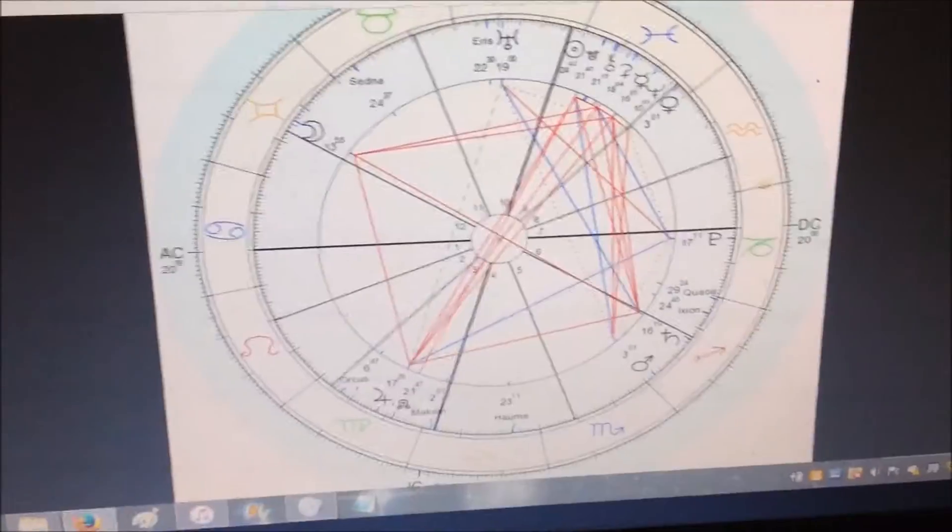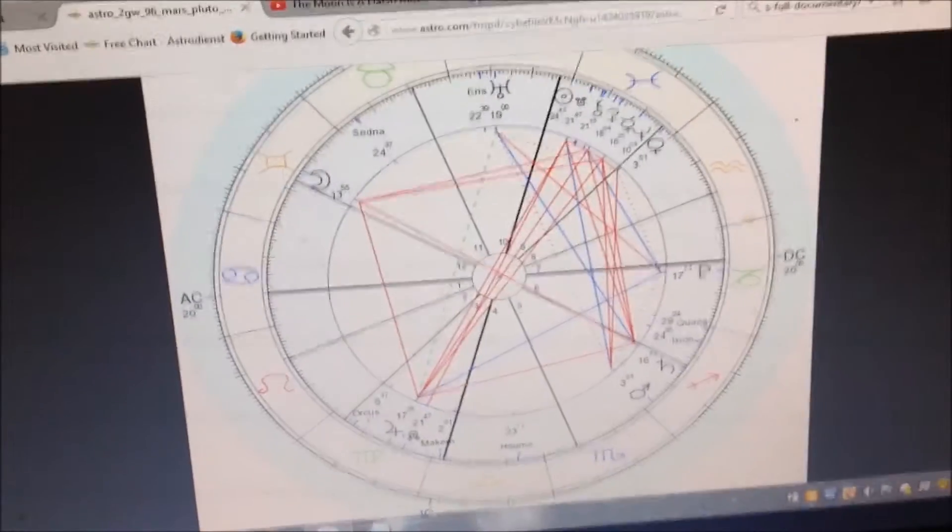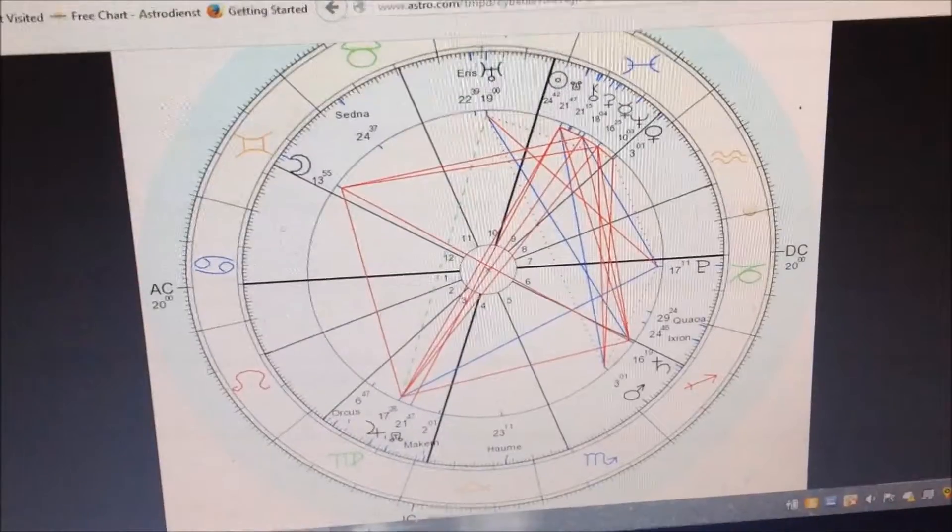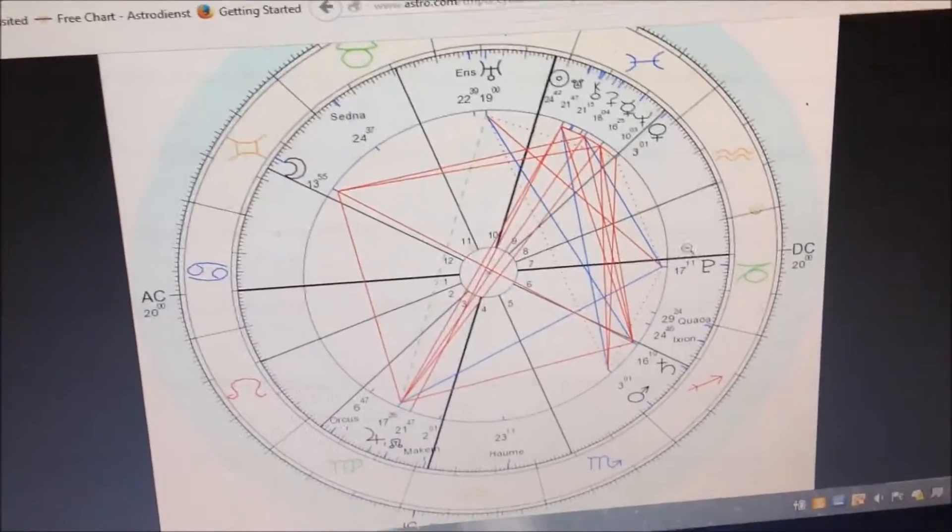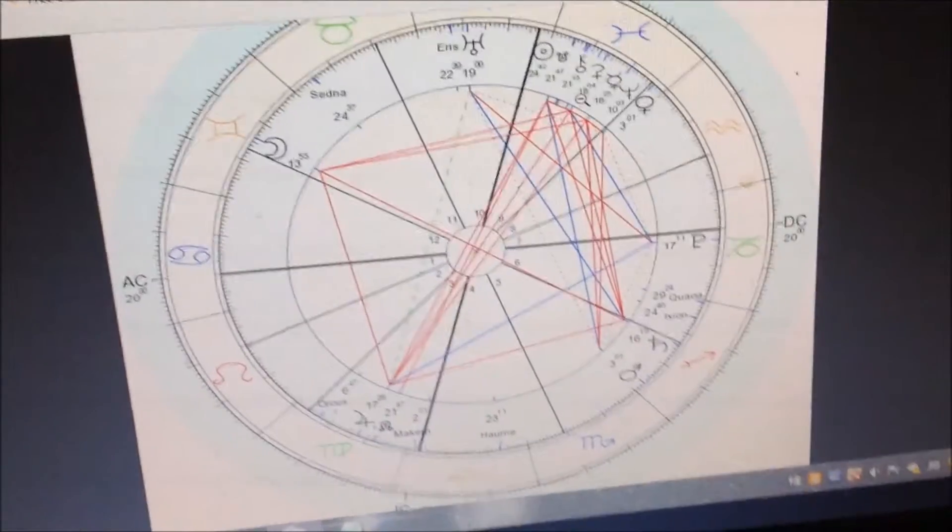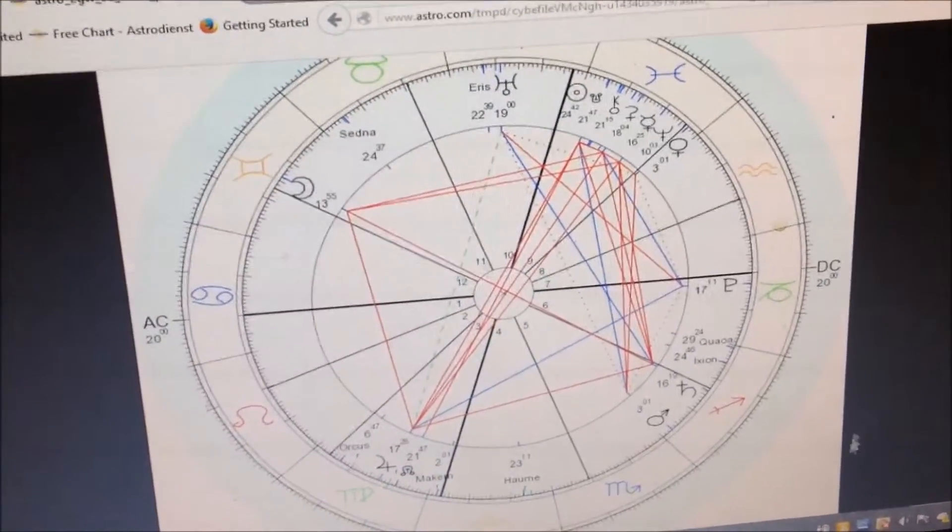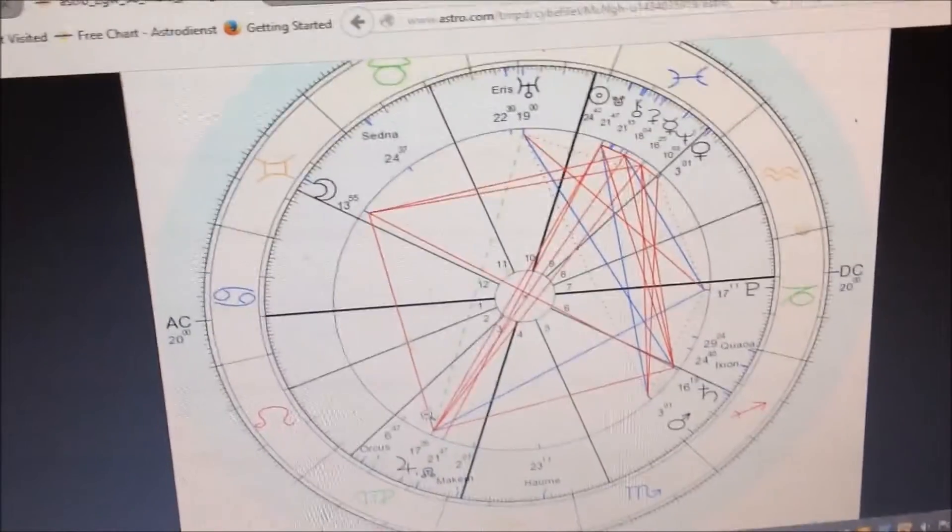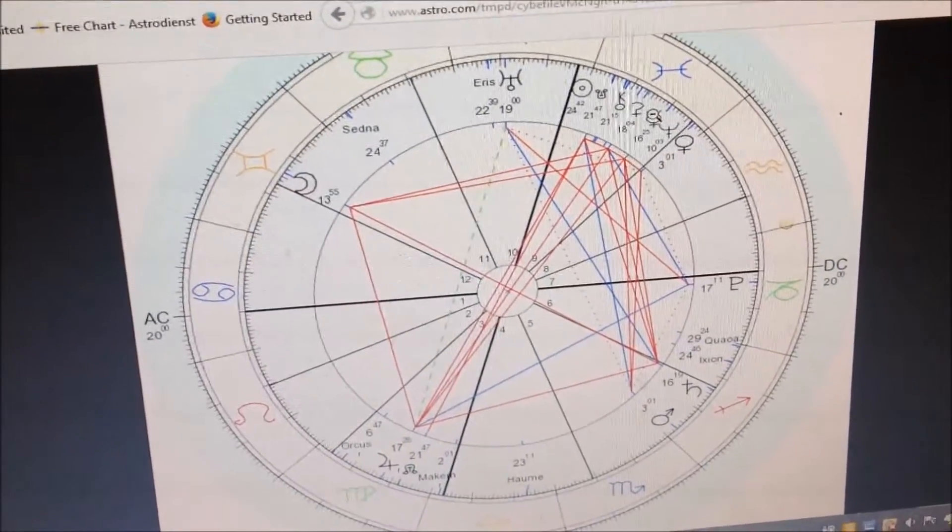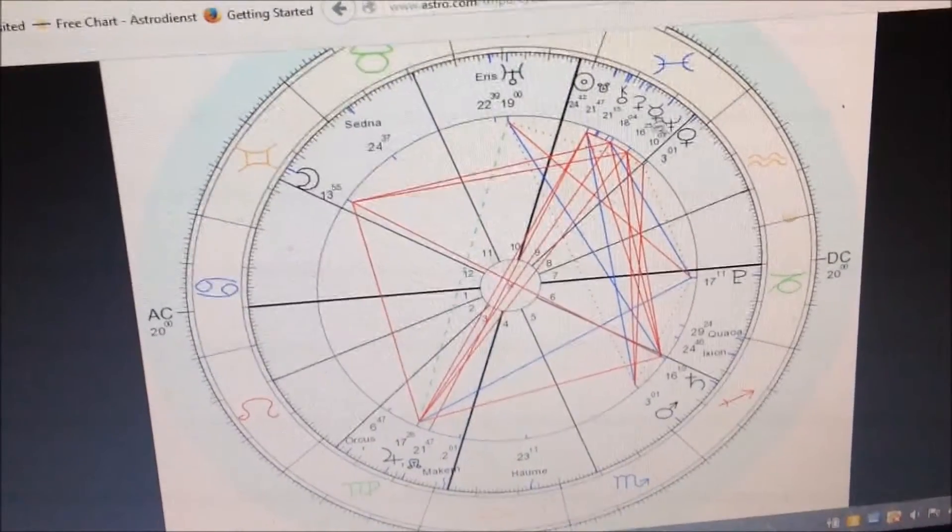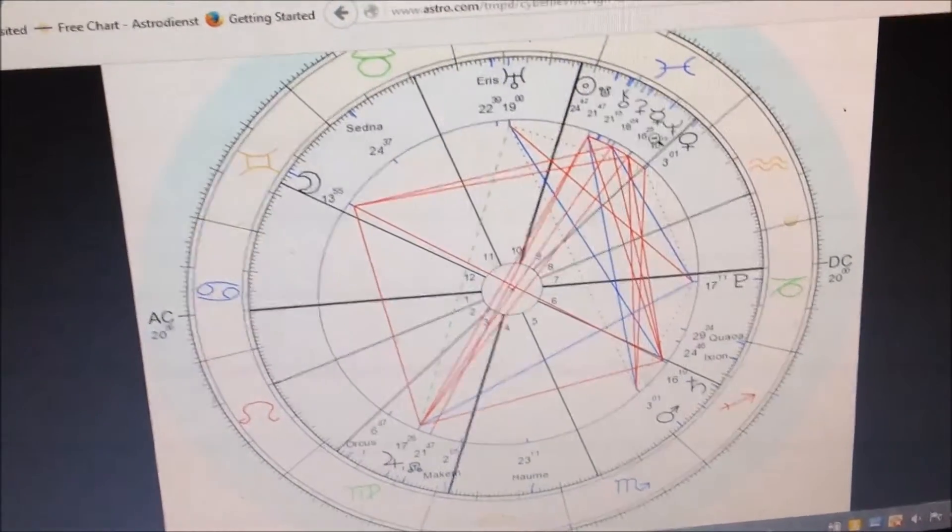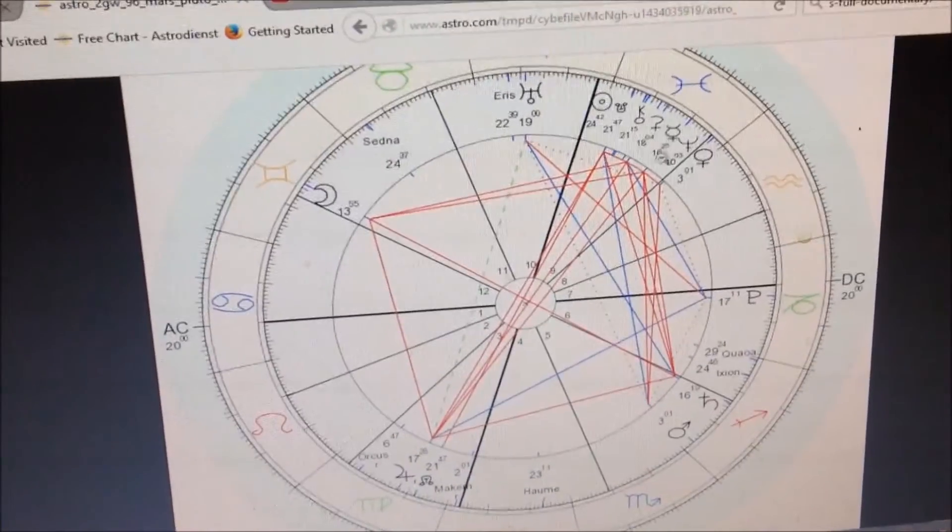Sorry about that, the video memory filled up. So for this next several months, it's going to be all squares. Venus is going to pretty soon come and square Saturn and oppose Jupiter too. Mercury right now this week is going to give us a very hard dose of Saturn.